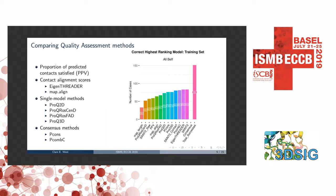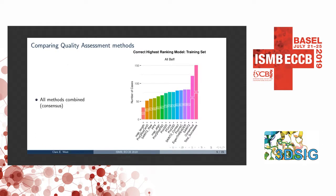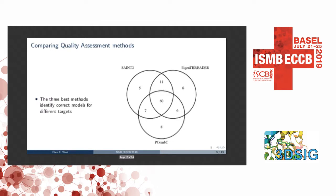We also looked at a variety of other methods for doing this, including the proportion of predicted contacts satisfied in the models, contact map alignment scores, and some state-of-the-art single model and consensus methods. These different methods perform well on different kinds of targets: where we have a very large sequence alignment, methods based on contact predictions perform very well; where we have less sequence information, methods based on knowledge potentials and physics potentials become more useful. When we look at the consensus of all 13 methods, we are able to highly rank a correct model for 121 targets. And when we look at just the three best methods — SAINT2, Eigenthreader, and PCOM-C — we can see these are highly ranking a correct model for different targets.